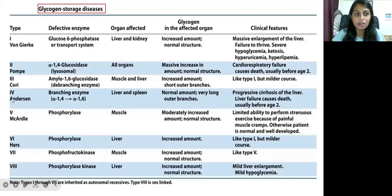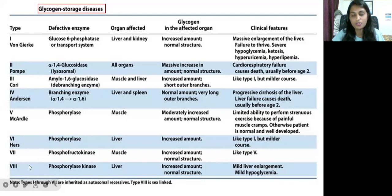Usually seven main glycogen storage diseases are there, and along with these, two more diseases are also discussed in today's video.